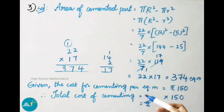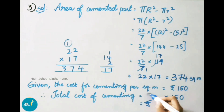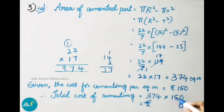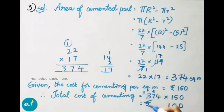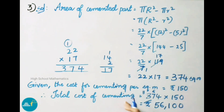Cost for cementing per square meter is 150 rupees. Total cost = 374 × 150. Write 0 and multiply by 15: 15 × 4 = 60, write 0 carry 6; 15 × 7 = 105, plus 6 = 111, write 1 carry 11; 15 × 3 = 45, plus 11 = 56. Therefore, total cost of cementing is 56,100 rupees.